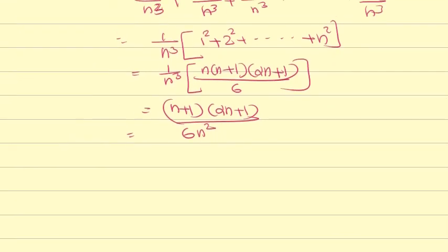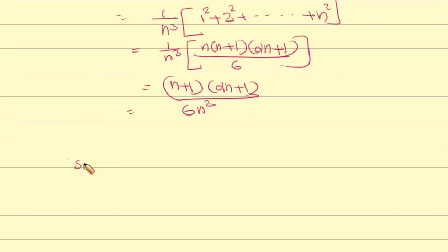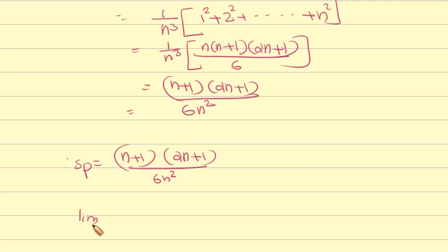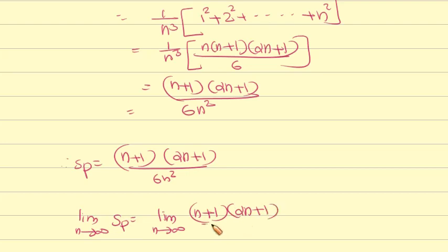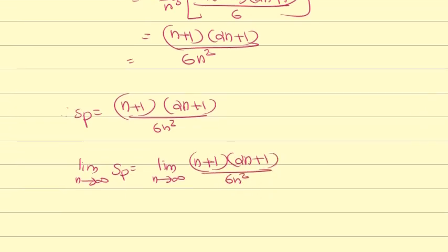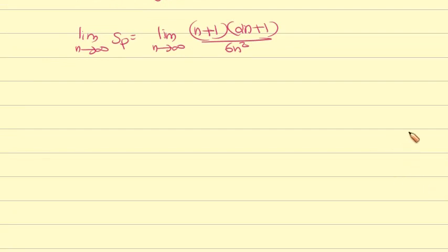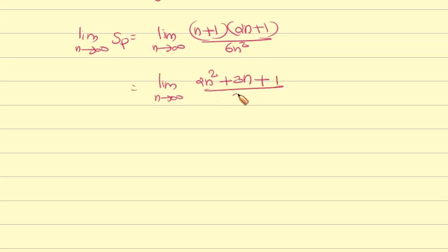Therefore, Sₚ = (n+1)(2n+1) / (6n²). Now we take the limit as n tends to infinity of Sₚ, which equals the limit as n tends to infinity of (n+1)(2n+1) / (6n²).